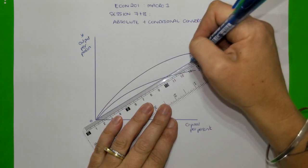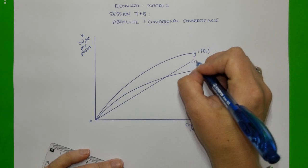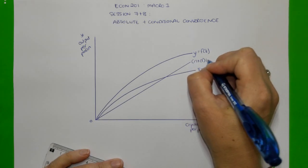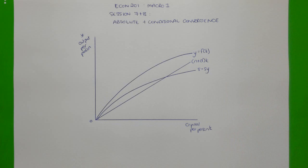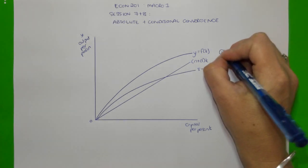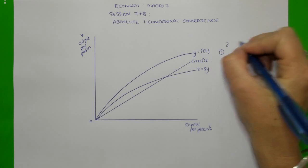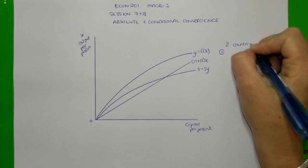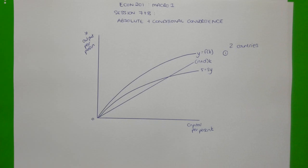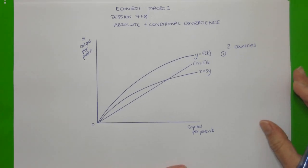We're going to start by looking at absolute convergence. Absolute convergence is one of those concepts where you can think about it theoretically, but in reality it's quite unlikely to happen. That's because for absolute convergence to occur, there's a very strict set of assumptions that would have to be met. When looking at convergence we're always comparing countries; to keep it simple, we're just going to compare two countries.